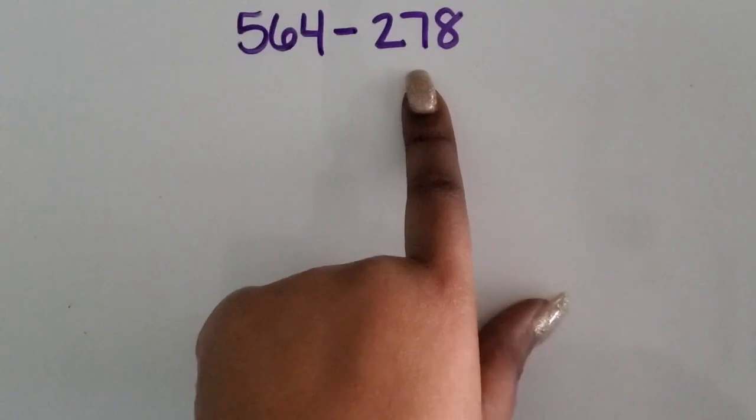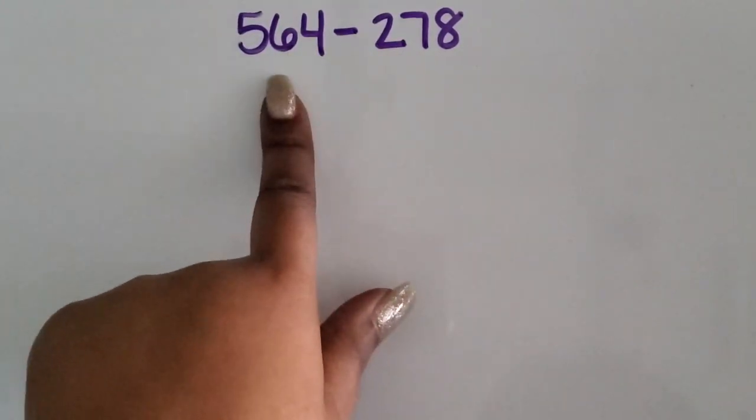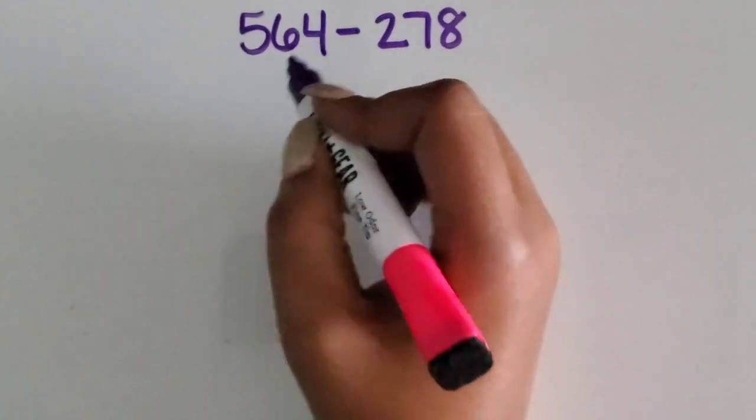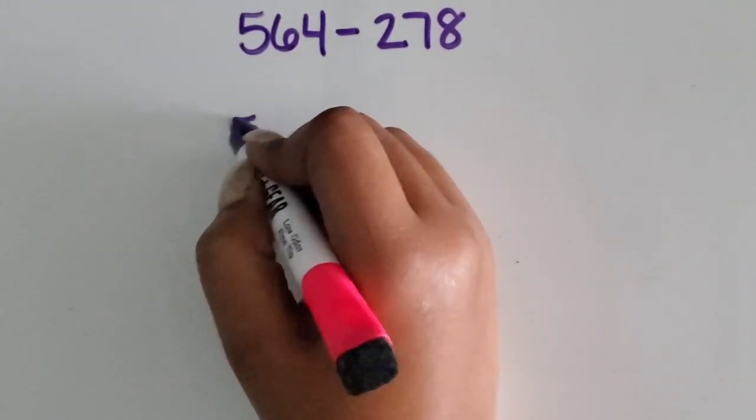We are going to subtract one three-digit number from another three-digit number using expanded form. We're going to start by showing the value of the digits based on their place value.